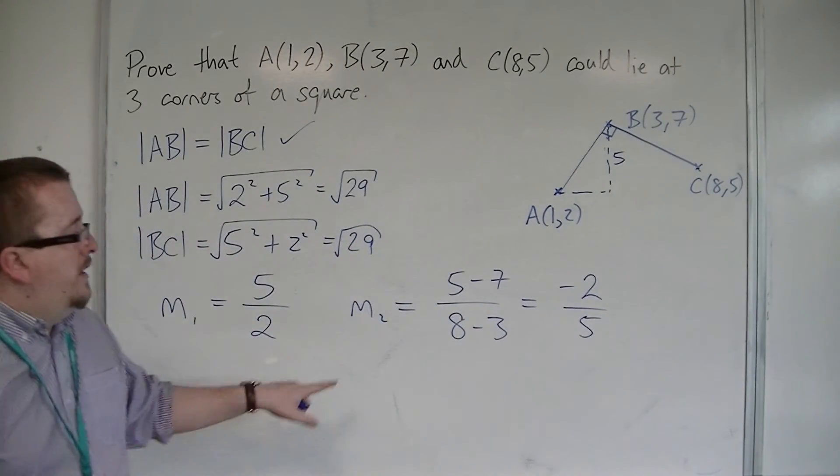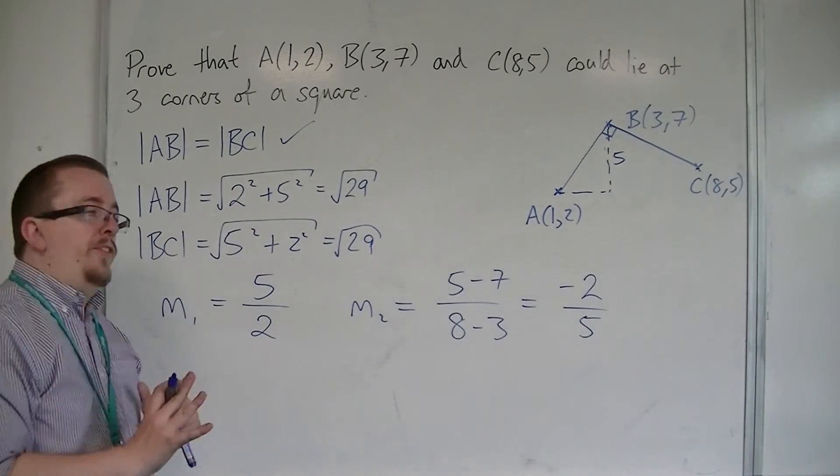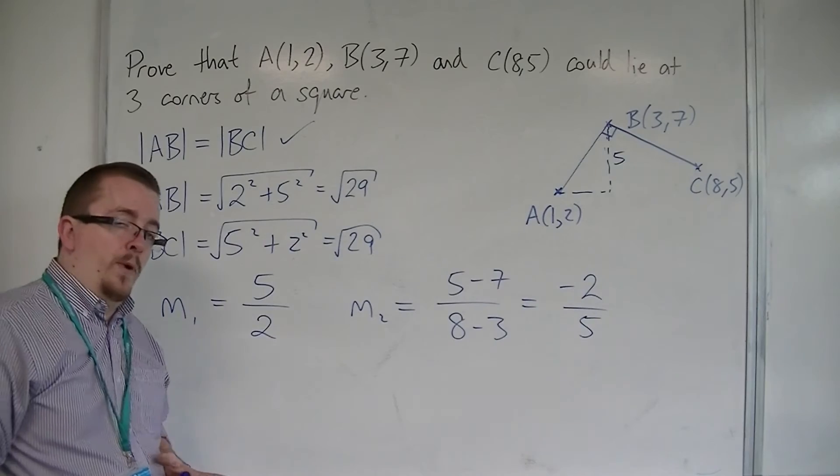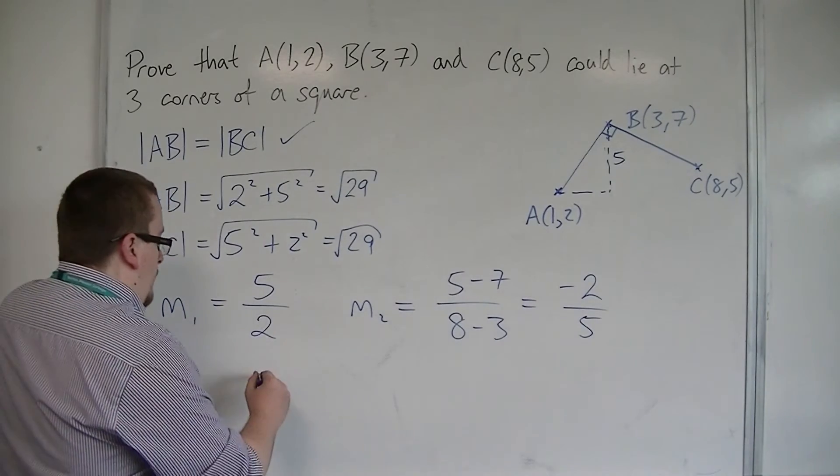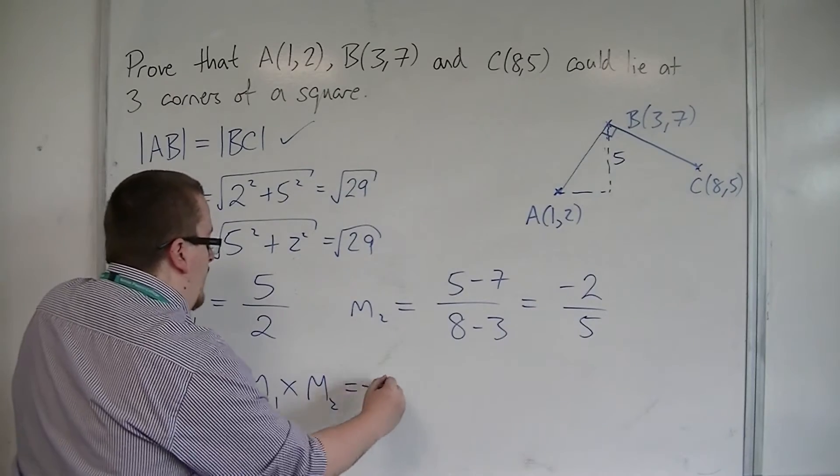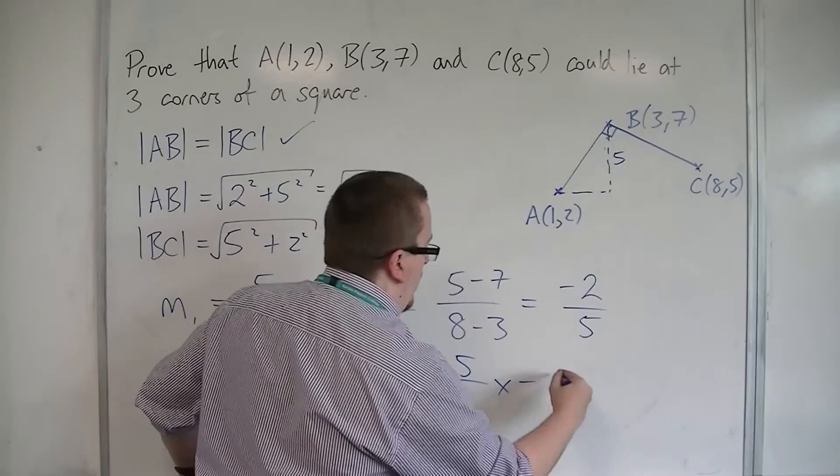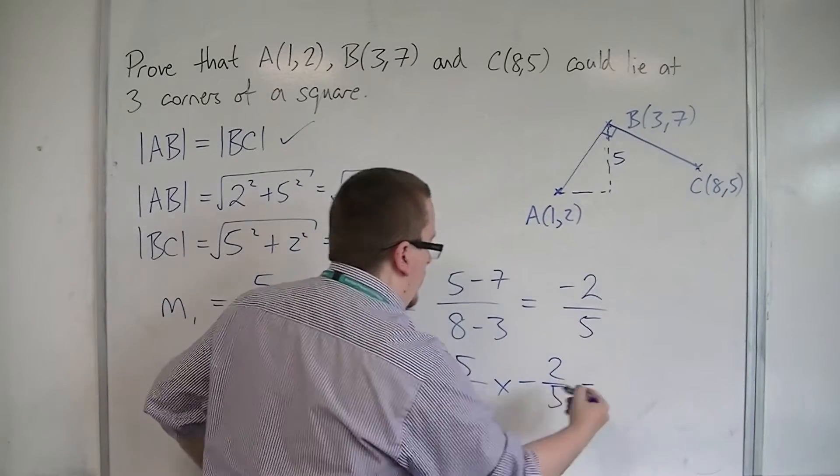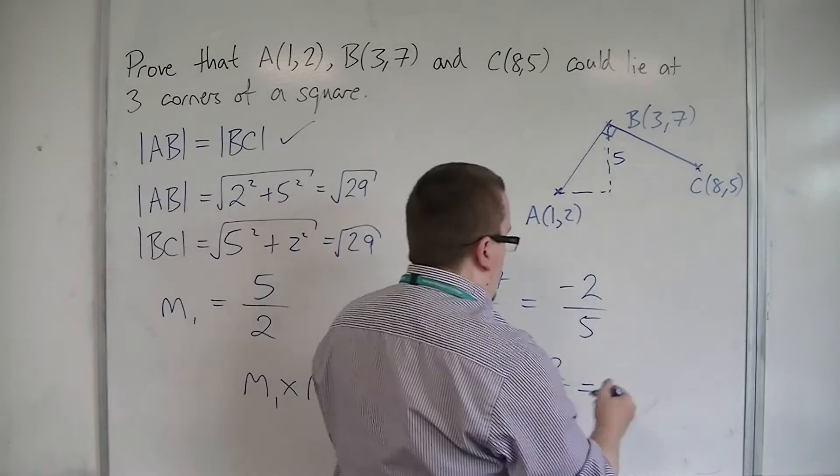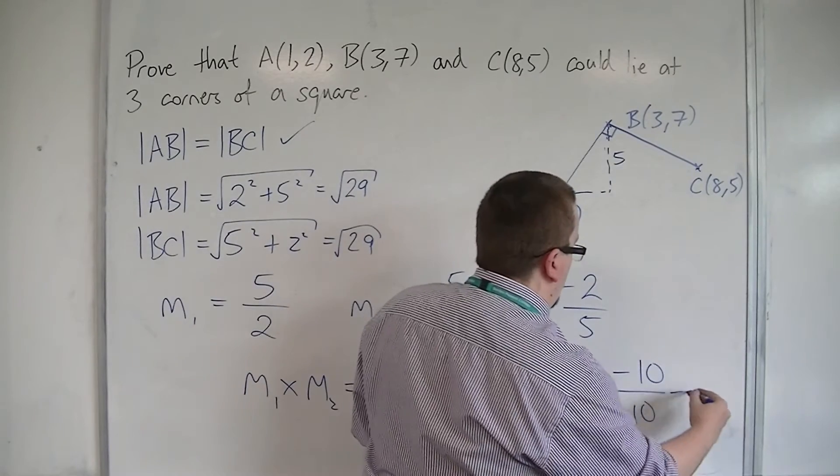So, we've got m1 is 5 halves, m2 is minus 2 fifths. It's not enough to then say that these are negative reciprocals to one another. What we'll show is that m1 times m2 is equal to minus 1. So, we multiply 5 halves by minus 2 fifths, and we get minus 10 over 10, which is minus 1.